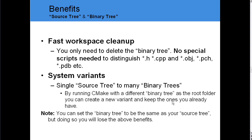The benefits of using source tree and binary trees: it provides fast workspace cleanup — you only need to delete the binary tree or your build directory, with no special scripts needed to distinguish your header, CPP, and object files. It also provides system variants, where a single source tree can produce many binary trees. By running CMake with different binary trees as the root folder, you can create new variants. A good example is producing both VC6, VC2005, and VC2008 projects at the same time.